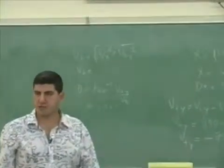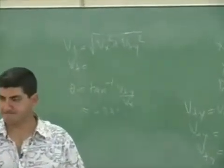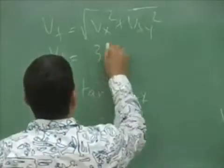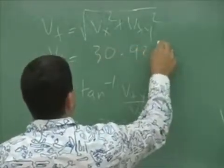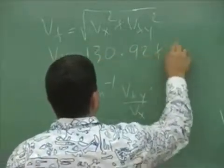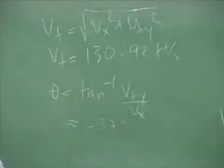So do both of those. Tell me what you get. 30.92. No, 130, right? 130.92. And then do the angle. And you should get something like negative 36 or negative 37.